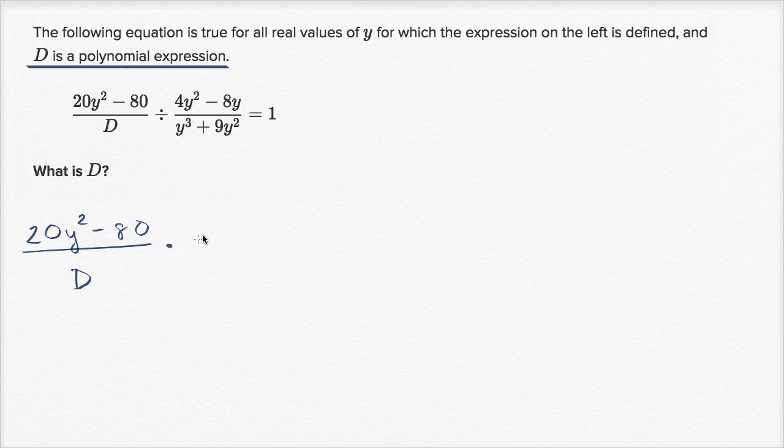If I divide by something, it's the same thing as multiplying by the reciprocal, so let me just swap the numerators and denominators. Alright, y to the third plus 9y-squared, all of that over 4y-squared minus 8y. That's going to be equal to one.